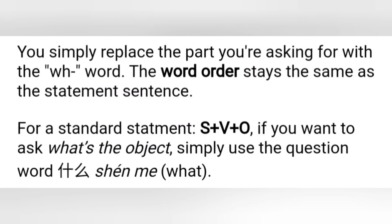Good morning. In this lesson, we will be learning how to ask questions — the first one: question words. In Mandarin, asking a question is super easy. You simply replace the part you are asking for with the wh-word. The word order stays the same as the statement sentence. The standard statement sentence is subject plus verb plus object. If you want to ask what the object is, simply use the word 'shuma,' or 'what' — that is the question word.